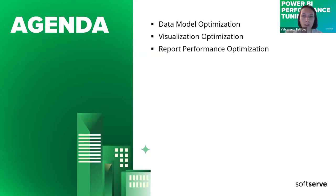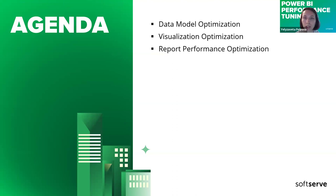Let's start with our agenda. I divide performance optimization in Power BI into three different categories: data model optimization, visualization optimization, and report performance optimization. They are all very interconnected — small steps you do on the way when you work with the report. First you work with the data model, then you go to visualizations, and then you measure the overall report performance.